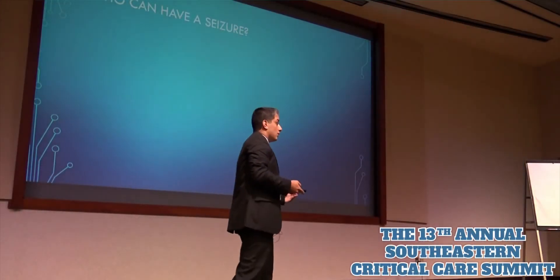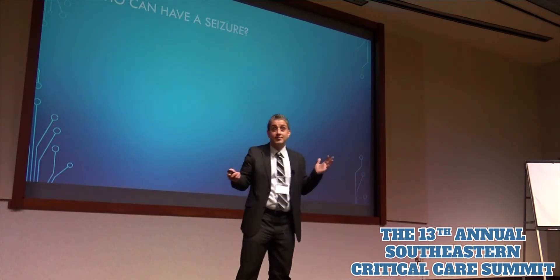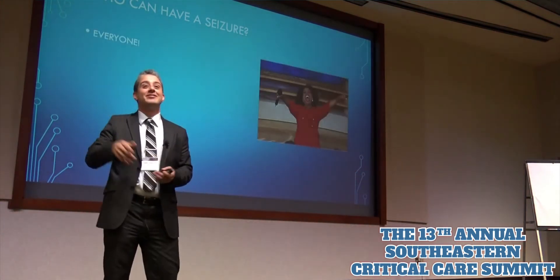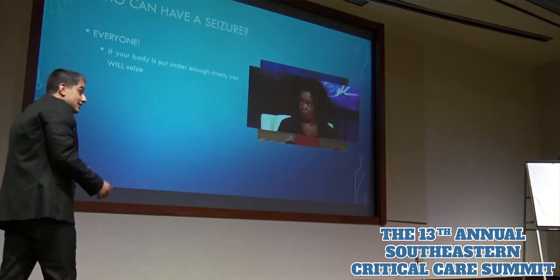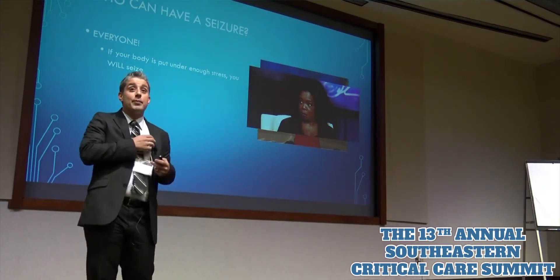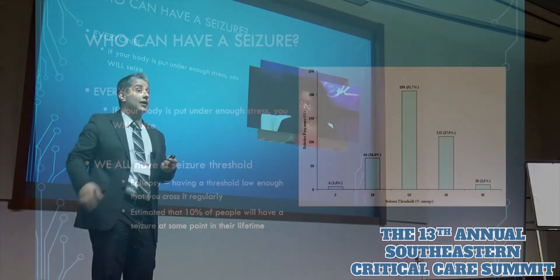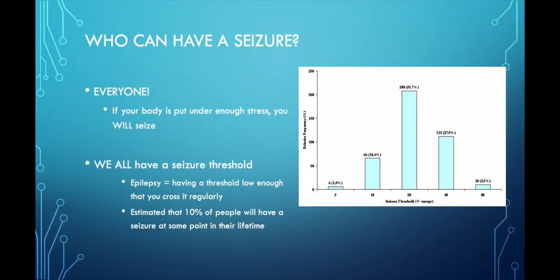So knowing that, who among us can have a seizure? The correct answer is everybody. You can have a seizure. Seriously, if I put your body under enough stress, every person in this room will seize. We know that because we use ECT — electroconvulsive therapy — to treat patients with psychiatric disease, and different patients require different amounts of stimulus to induce their brain to have a seizure. From that perspective, epilepsy is really just having a seizure threshold low enough that you actually cross it regularly. And 10% of us will cross our seizure threshold at some point in our life.